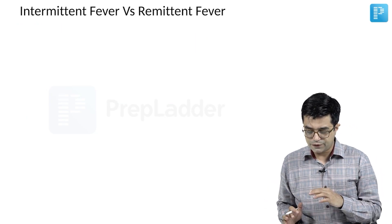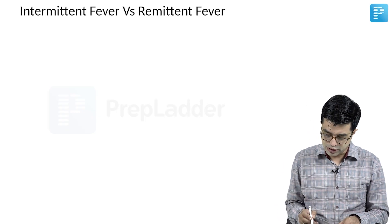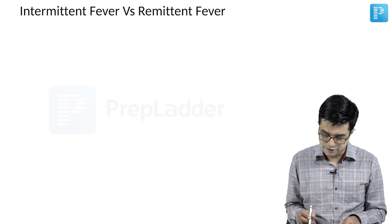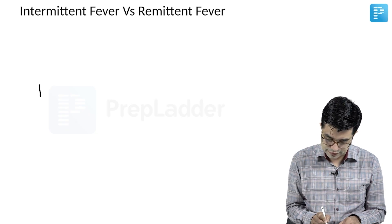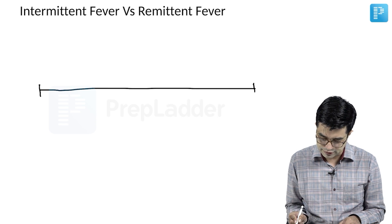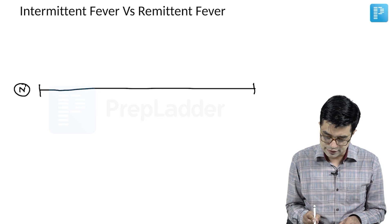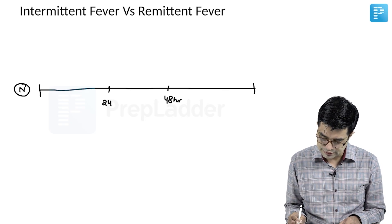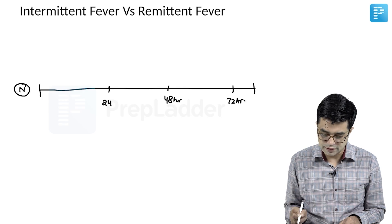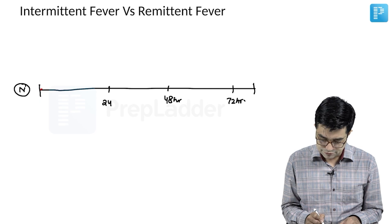There is often confusion between intermittent fever and remittent fever. If we look at a graph it will be easy to understand. This is your baseline — the normal body temperature. The x-axis shows 24 hours, 48 hours, 72 hours. Now, look at the first graph being drawn to illustrate the differences between these fever patterns.